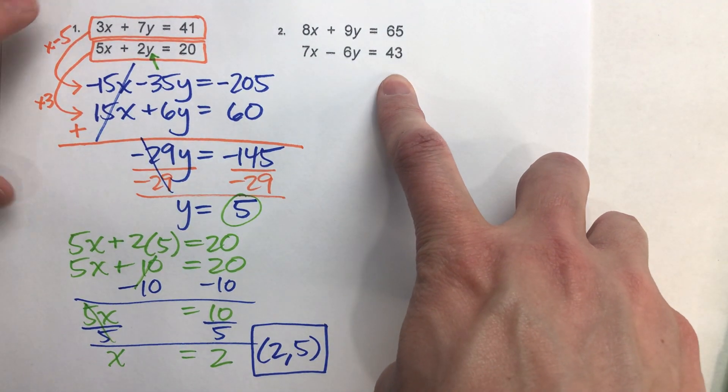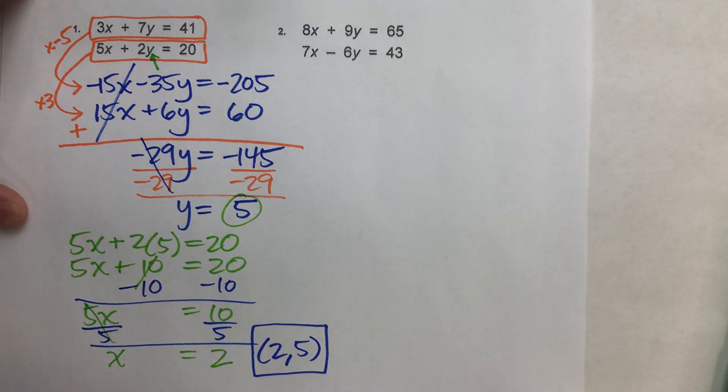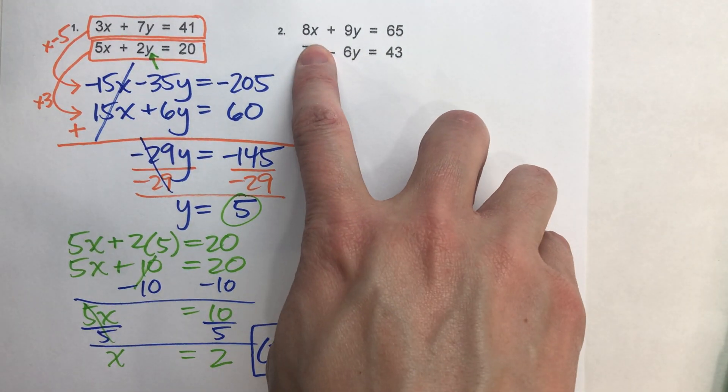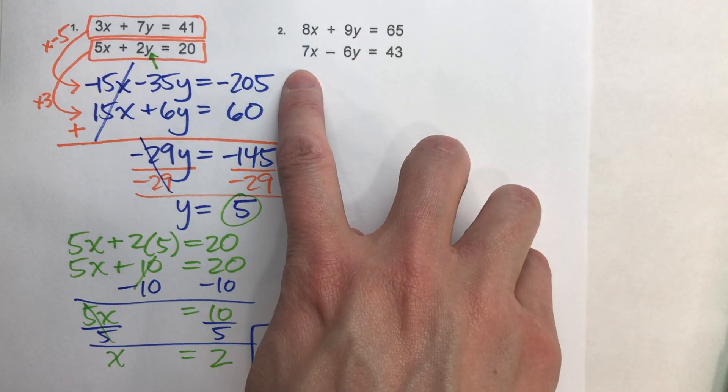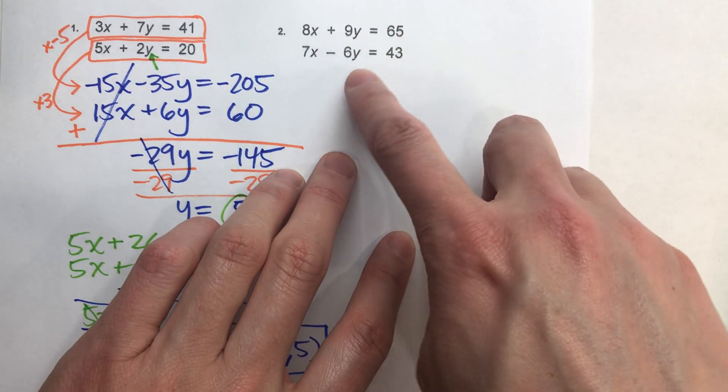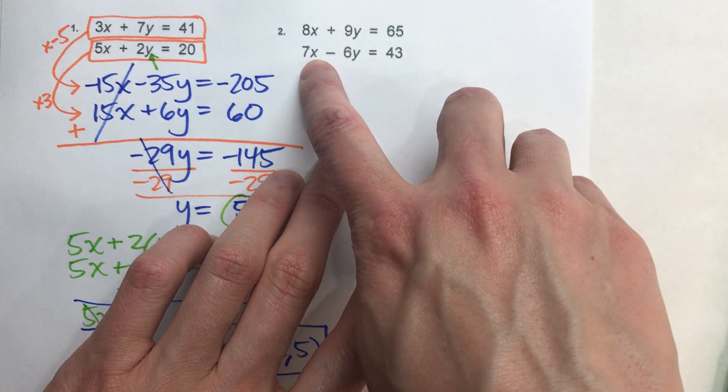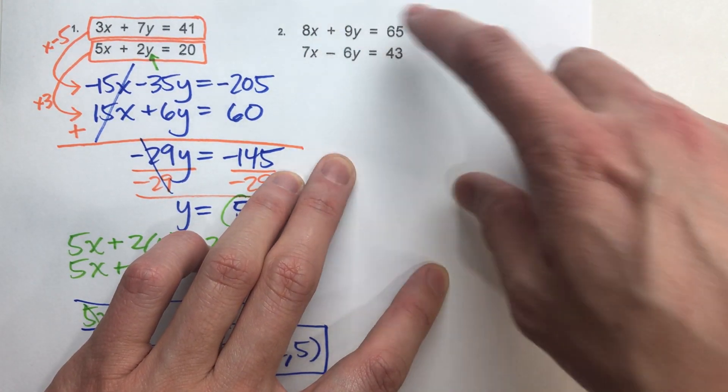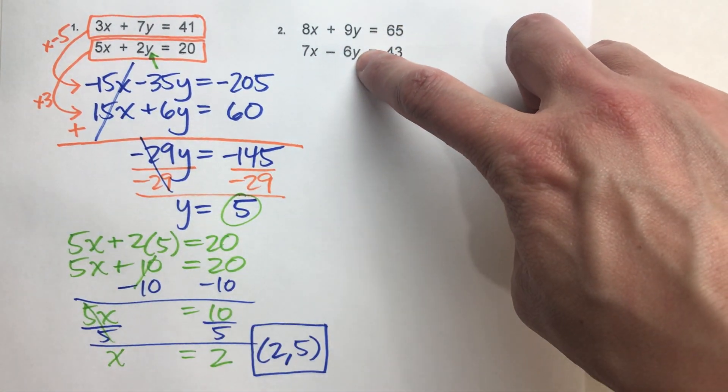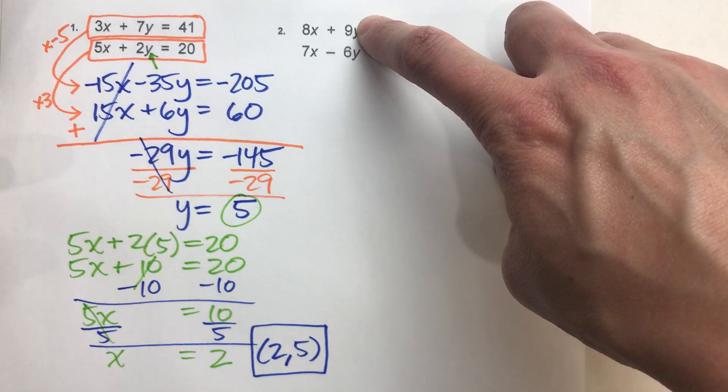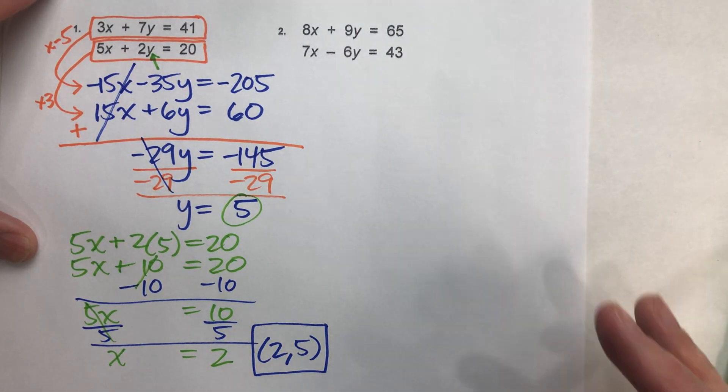Let's do a second example. And this time, let's match up our y's. So in my second example, I've got 8x plus 9y equals 65, 7x minus 6y equals 43. And notice there's no easy number I can multiply 7 by to get 8. And there's no easy number I can multiply 6 by to get 9. So I'm going to have to multiply both of them.